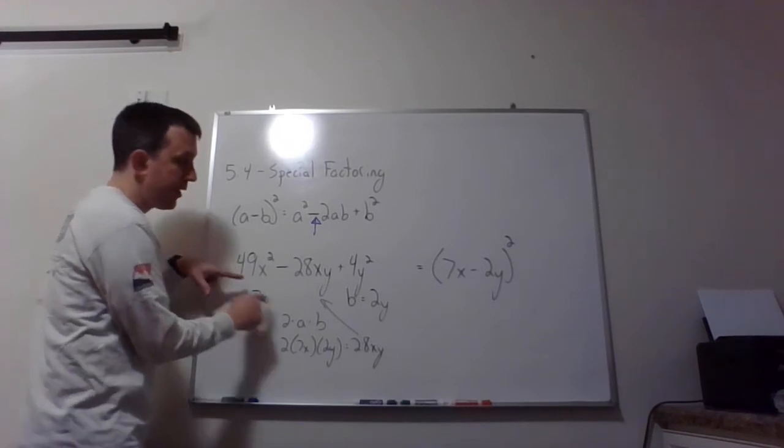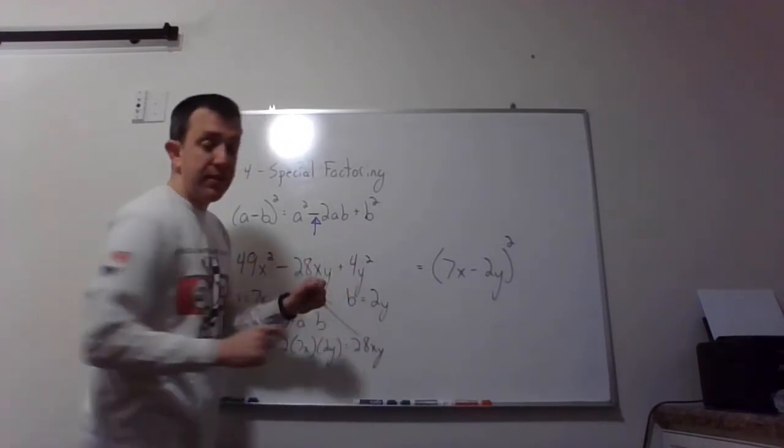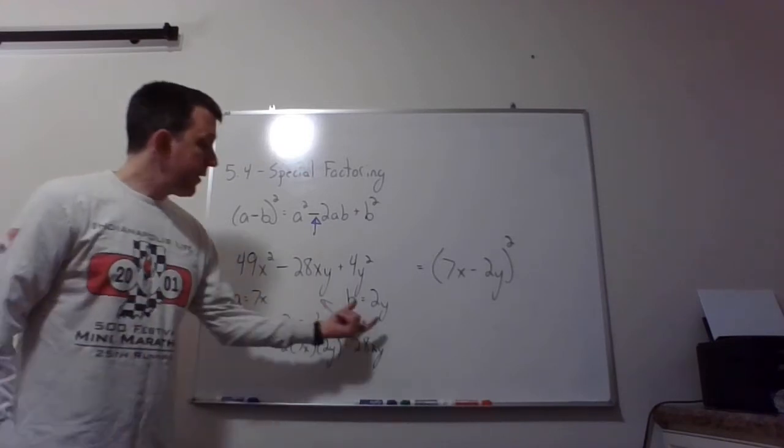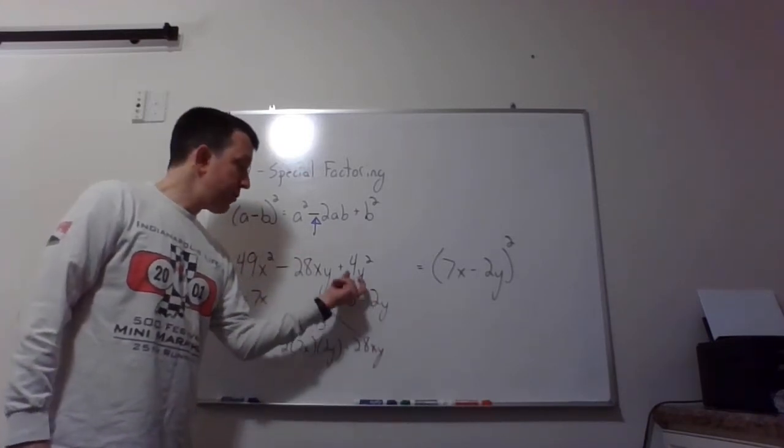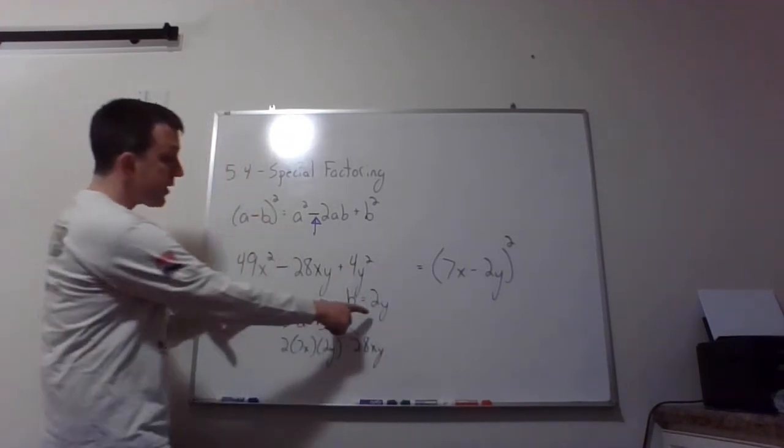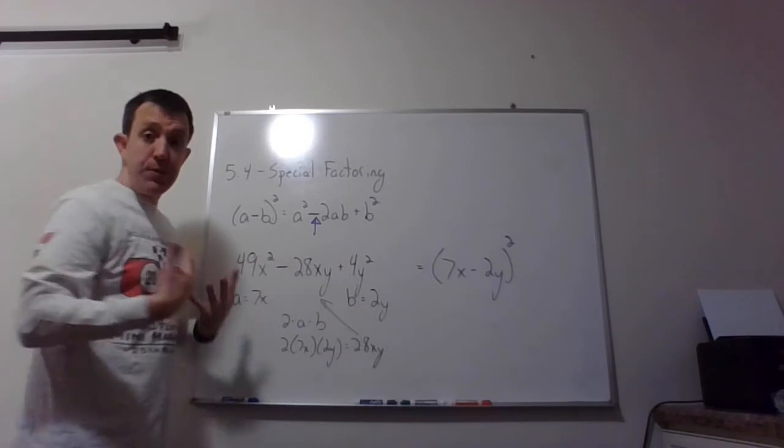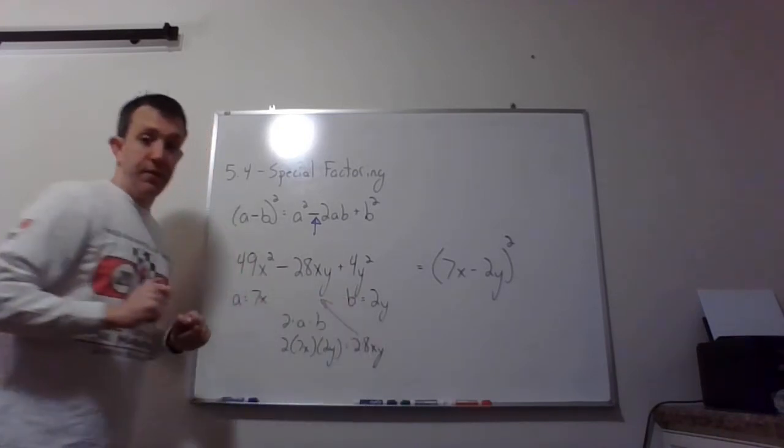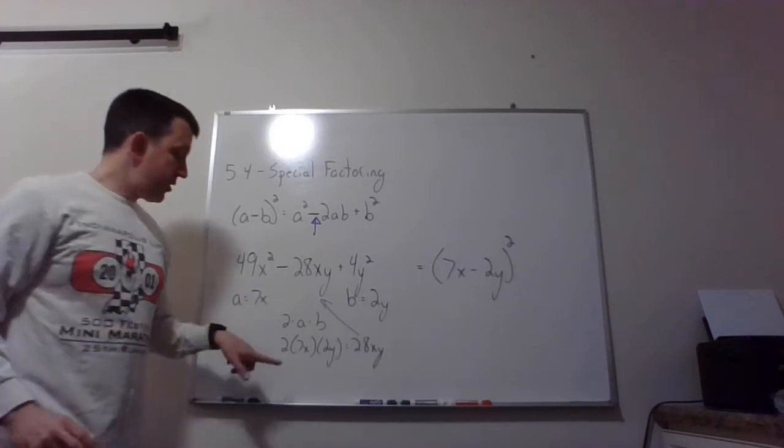And so right away I have candidates for a and b. A I think should be 7x because if I square that I get 49x squared, and b, the y is a little bit weird but it's not really, it's just more of the same kind of thing. B is 2y because again 2 squared is 4, so if we square 2y we get 4y squared. So it looks like we have a really good candidate here to use this pattern, right? We have the minus sign, we have squares at either end.